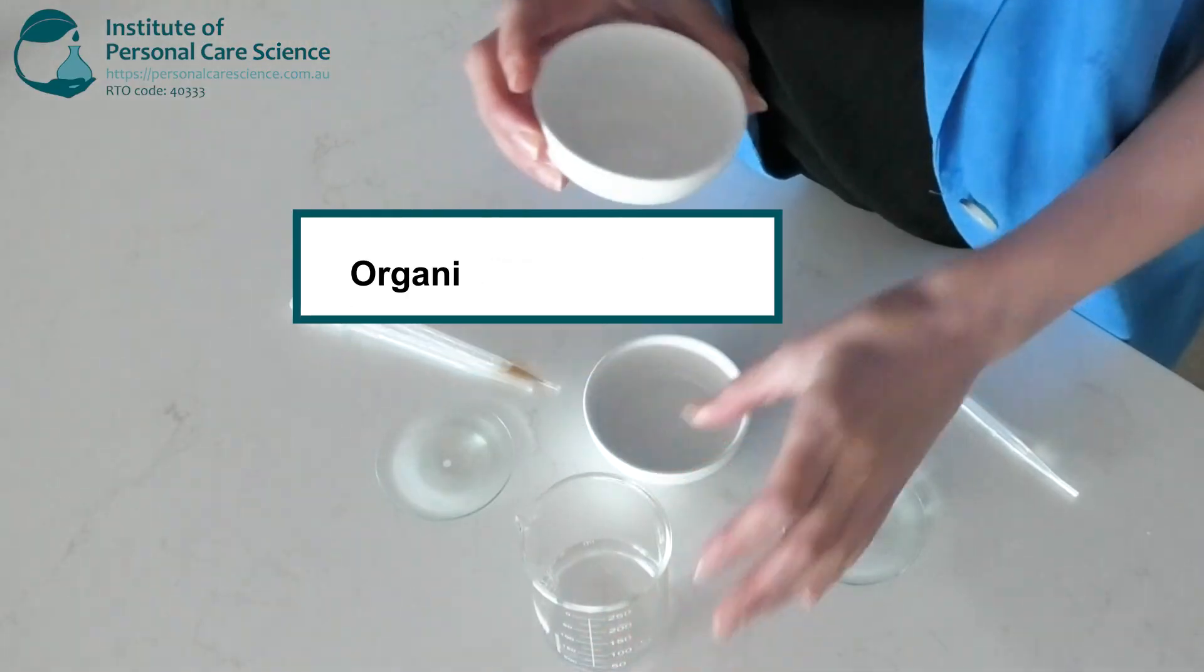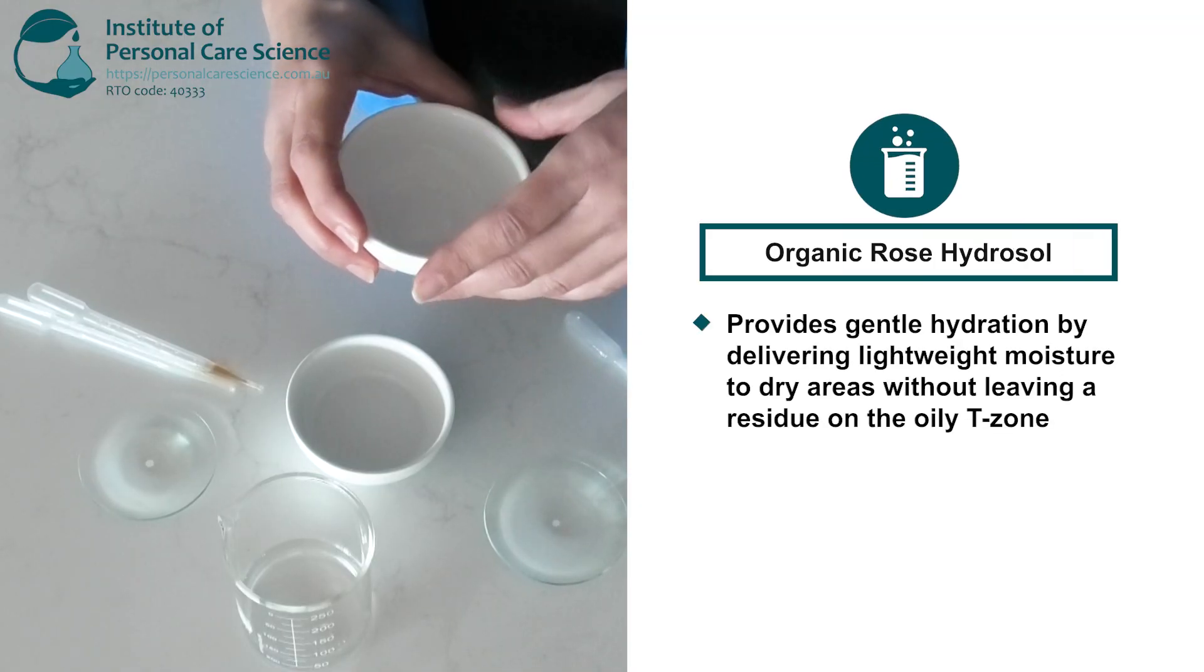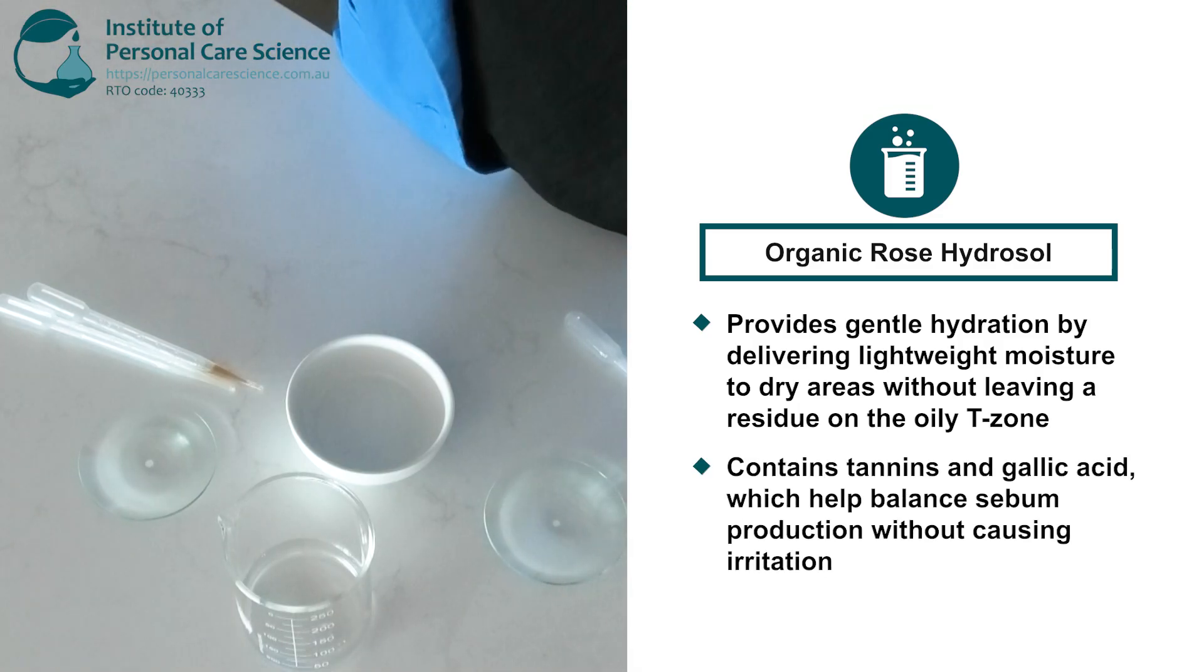The organic rose hydrosol offers gentle hydration by adding lightweight moisture to the dry zones without leaving film on oily T-zones. The tannins and gallic acid in the organic rose hydrosol can also help by balancing out sebum without irritating any sensitive areas of combination skin.